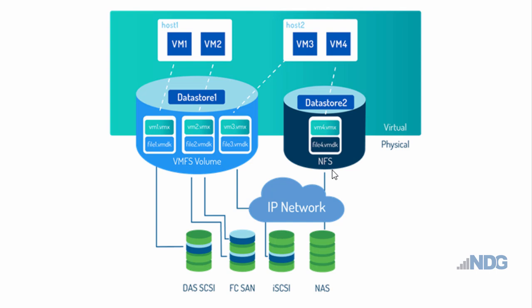Since it uses the network file system, it can also be accessed by third-party cloning or backup utilities. To summarize, the block level storage options are SCSI, Fiber Channel SAN, and iSCSI, while file level storage is provided by network attached storage using the network file system.